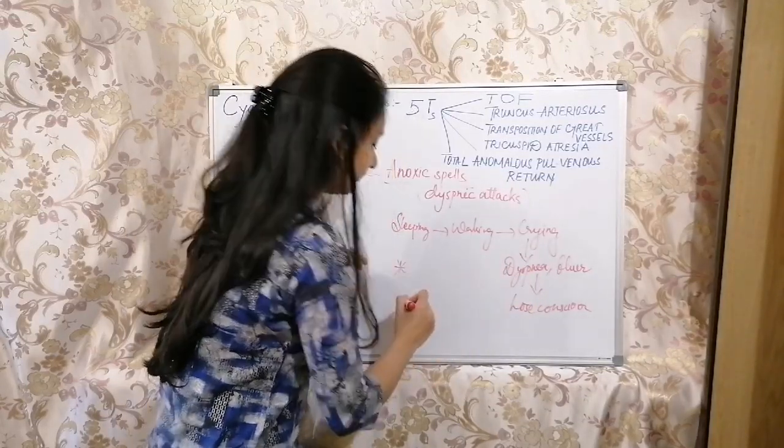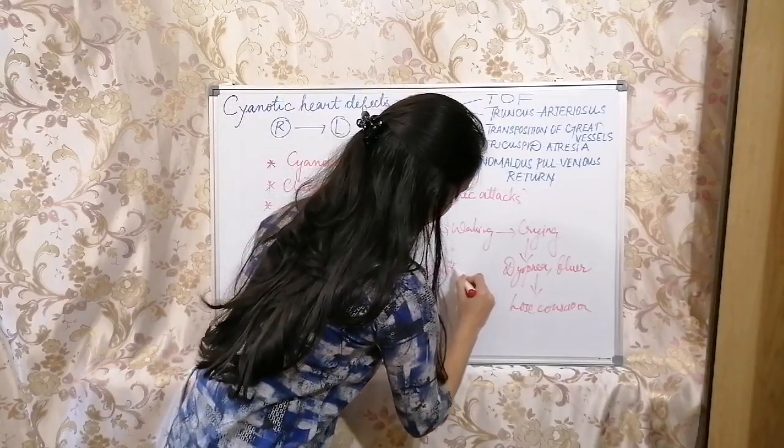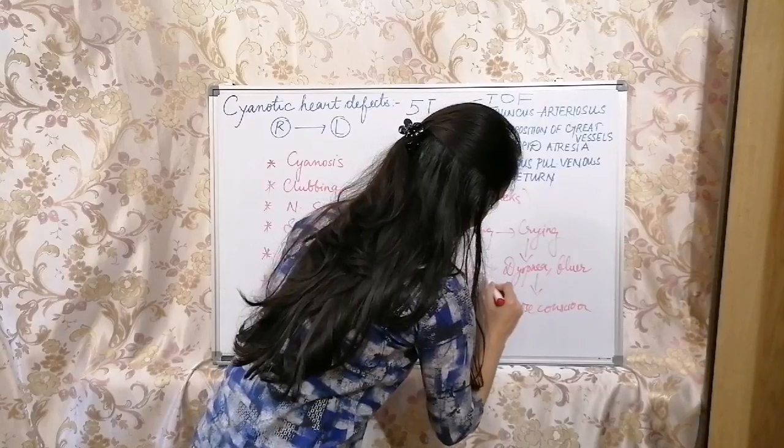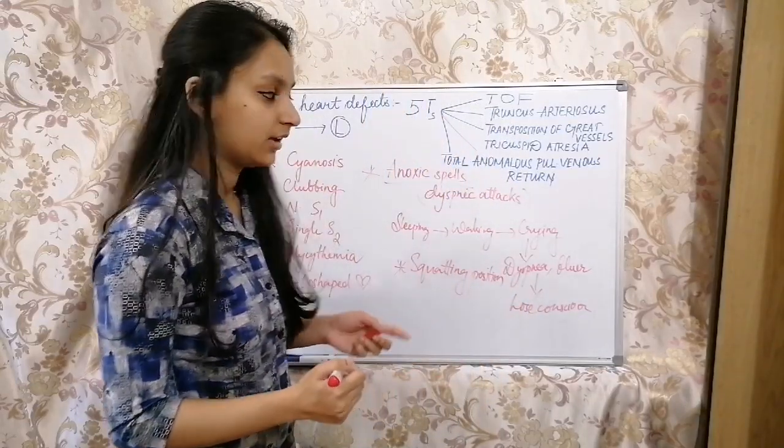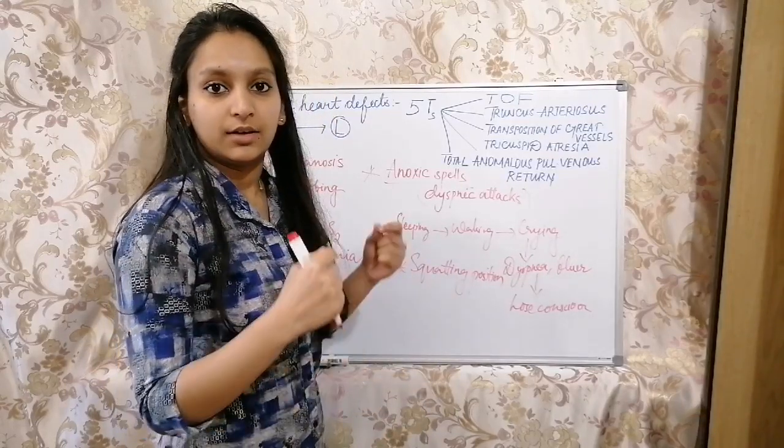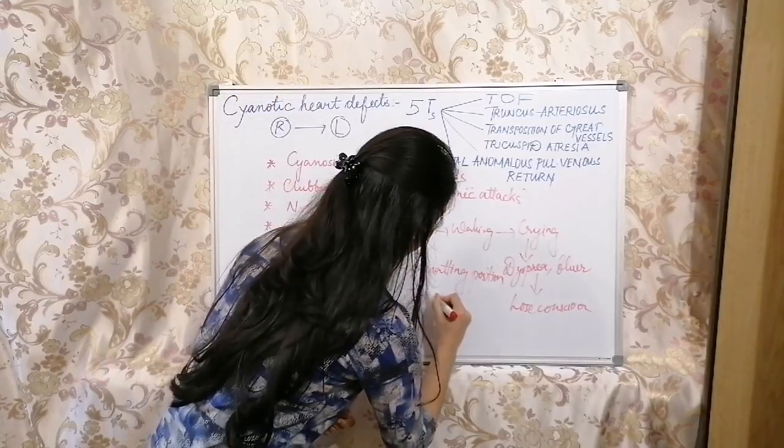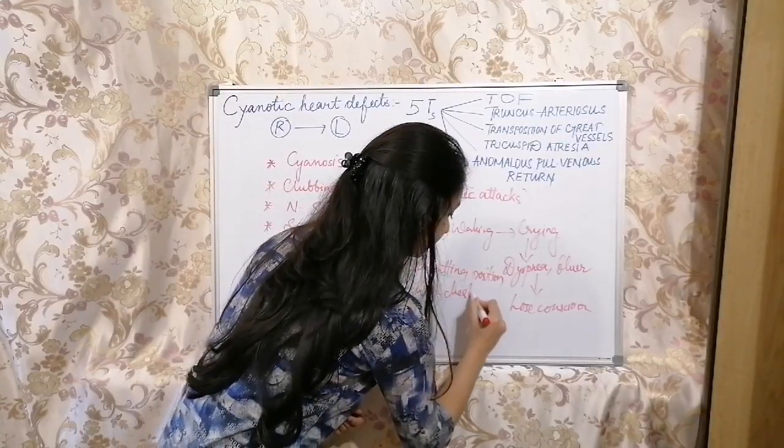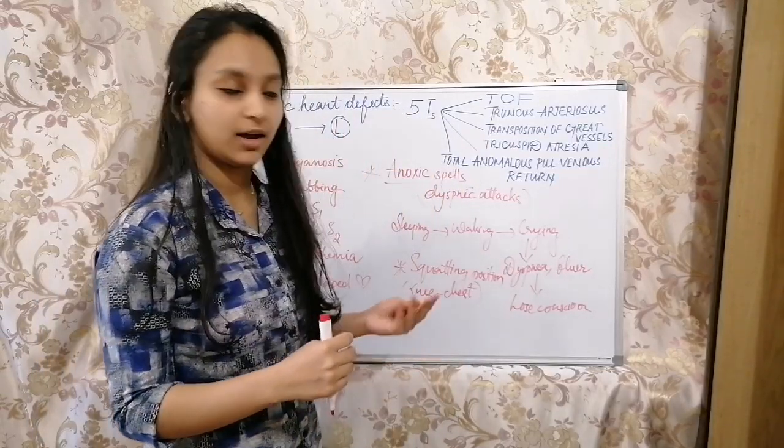The second important thing is the squatting position. In a broader child, you can see that whenever he or she faces dyspnea as well as appears blue in color, they will suddenly start sitting in squatting position. Squatting position is knee to chest position. The reason is because they personally feel very much better when they get into knee to chest position in order to get rid of anoxic spells.